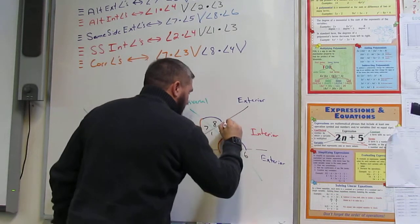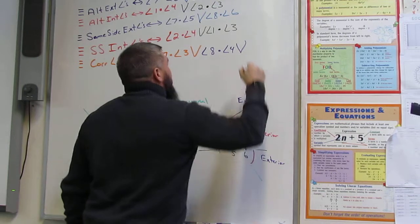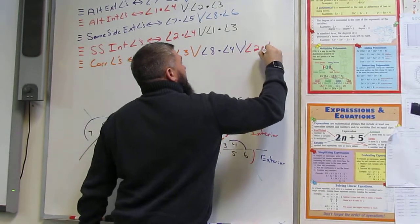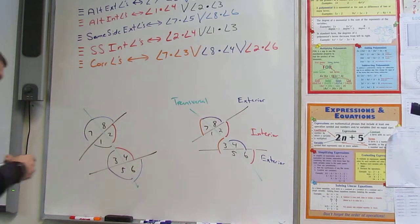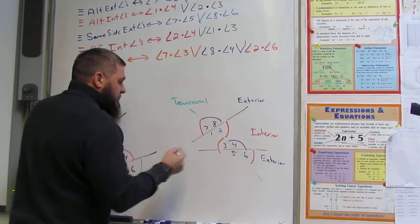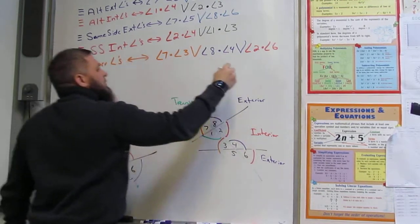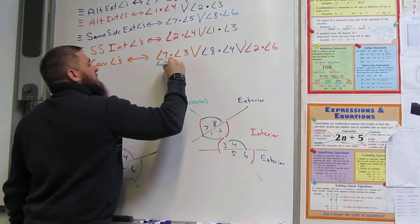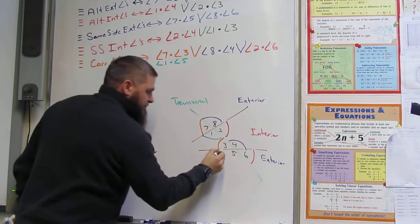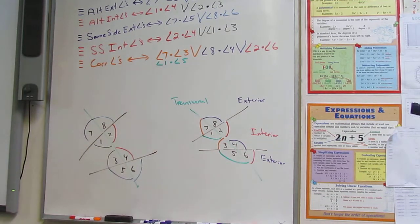Two and six — nice. Angle two and angle six. One more: one and five. Angle one and angle five. So those are your four pairs of corresponding angles.